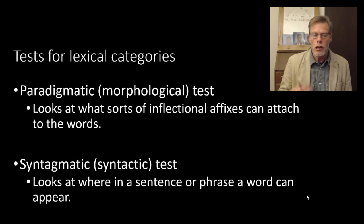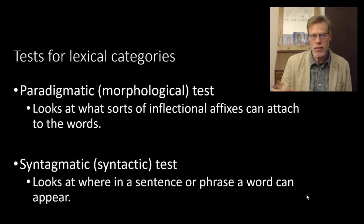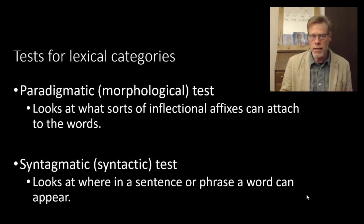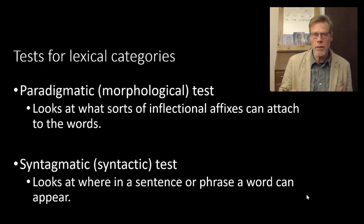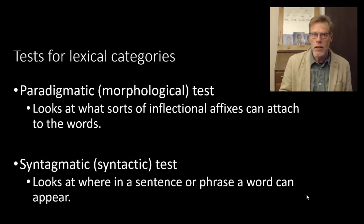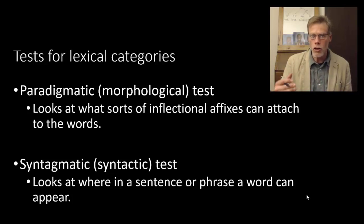Paradigmatic, or morphological tests, look at what sorts of inflectional affixes can attach to words. Inflections are affixes — in English, typically suffixes — that attach to words to create different forms of the same word. So if we think about conjugating verbs, you add an S to make the third person singular present tense: run, runs. We add -ED to make it past tense: walk, walked; live, lived. And then we've got -ING to make it a present participle: run, running; live, living; walk, walking. So if you can add those suffixes to a word, that's pretty good evidence that it's a verb. Likewise, if we can add -ER or -EST, that's pretty good evidence that it's an adjective: small, smaller, smallest; tall, taller, tallest.